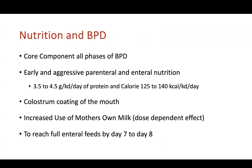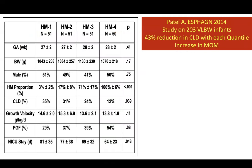Nutrition is a core component across all phases of BPD. In the early phase, aggressive parenteral nutrition should target 3.5 to 4.5 g/kg/day protein and 125 to 140 kcal/kg/day calories. Colostrum should be started as early as possible — on day one, coat the baby's mouth and gut with colostrum to establish favorable gut flora and prevent infections. Always aim to reach full enteral feeds by day seven or eight, predominantly using mother's own milk or donor human milk.